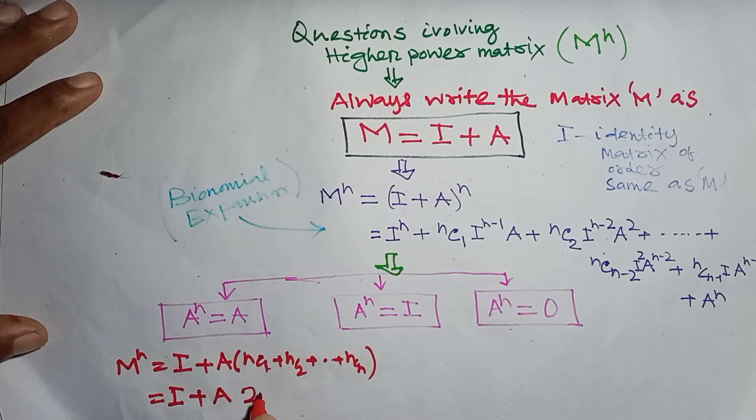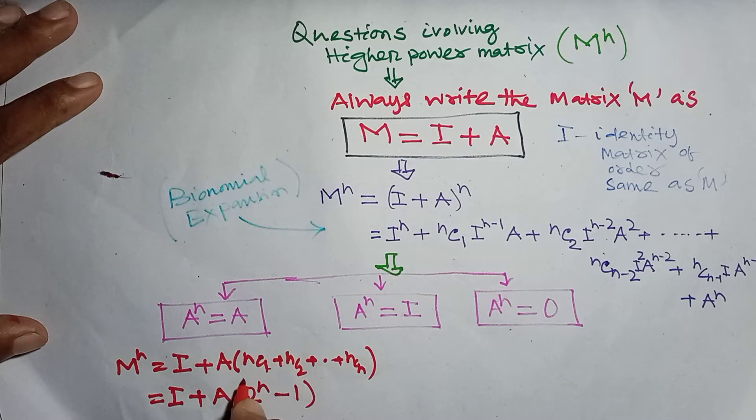The coefficient simplifies to 2^(n-1), so M^n = I + 2^(n-1)·A in Case 1.